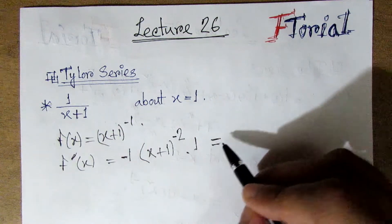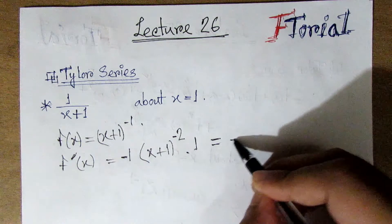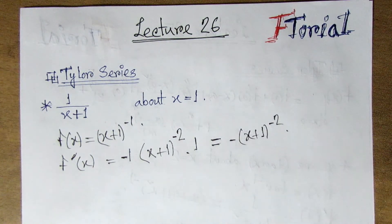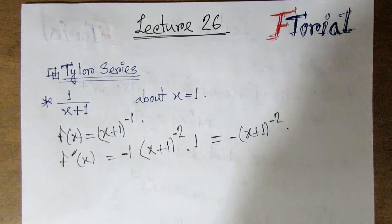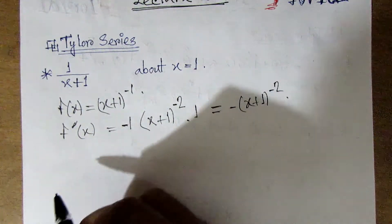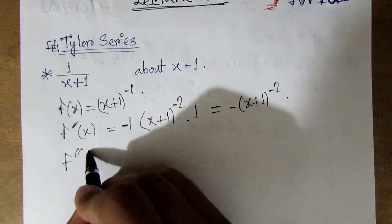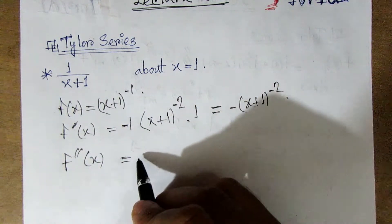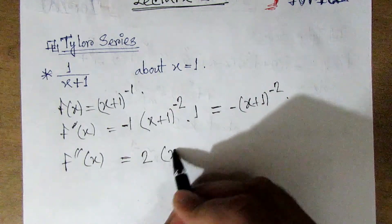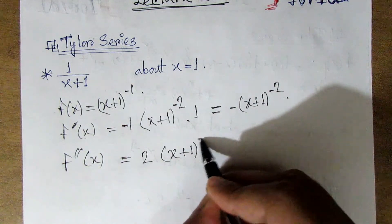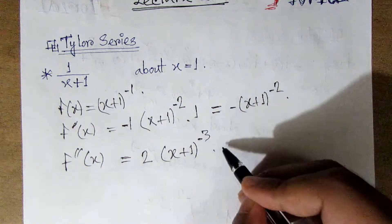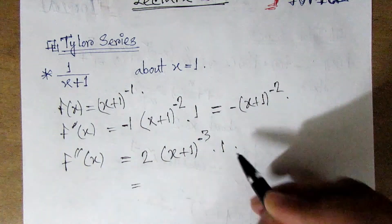In this case, the derivative is minus x plus 1 to the negative power. So x plus 1 equals 2, then x plus 1 cubed is 1.